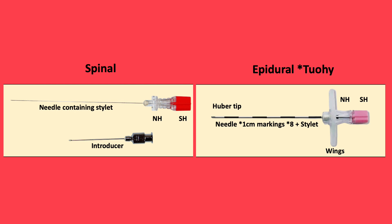Conversely, a Tuohy needle or epidural needle is 16 to 19 gauge. These are 8 centimetres long, but can be longer, with 1 centimetre markings. There's a Huber tip, wings, needle hub, stylet, and stylet hub. These needles are wider to allow the insertion of a catheter, and the Huber tip is curved to allow delivery of the catheter to the epidural space.